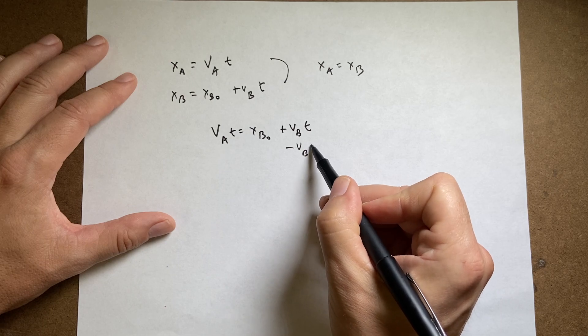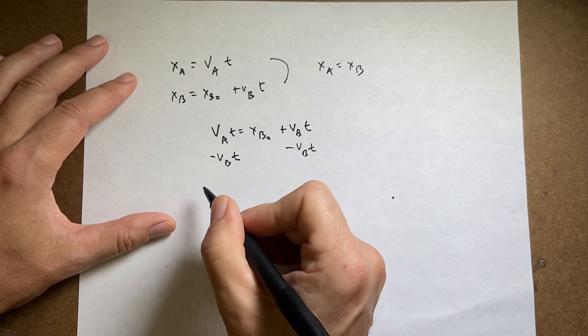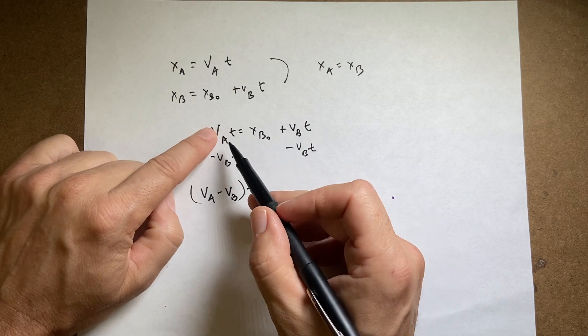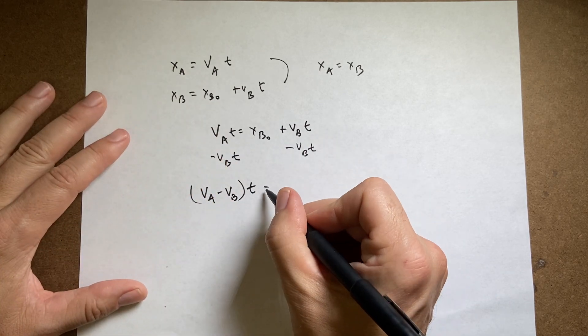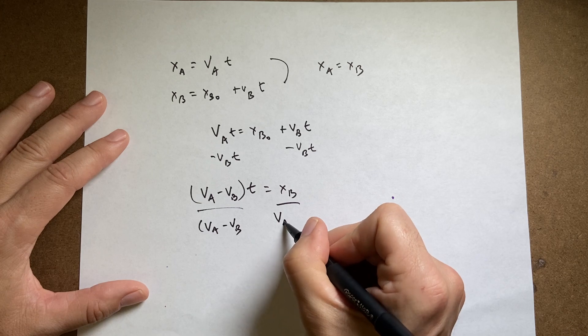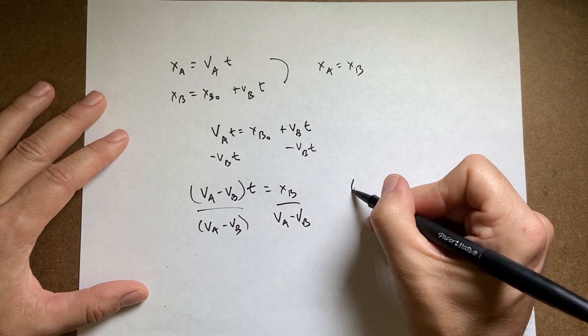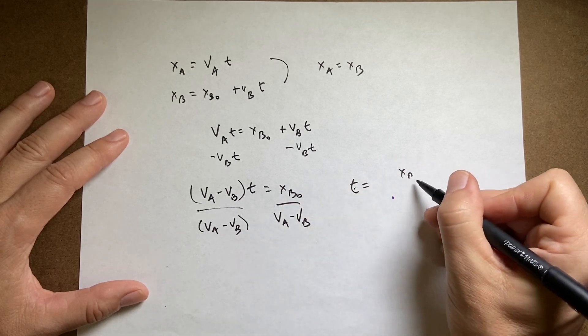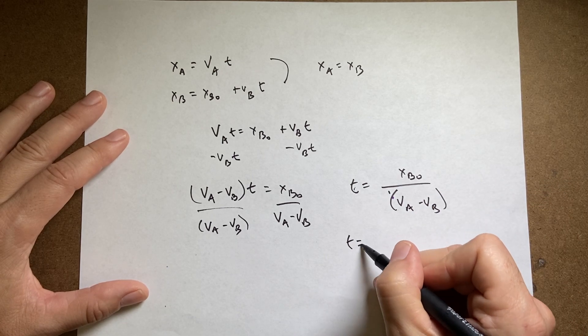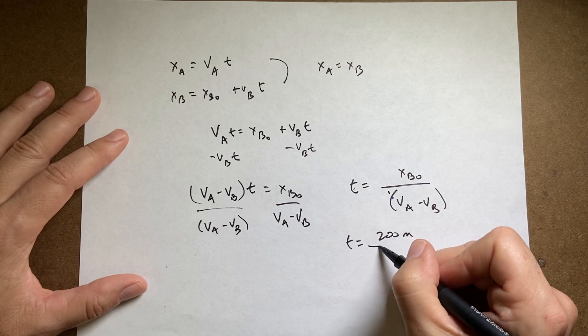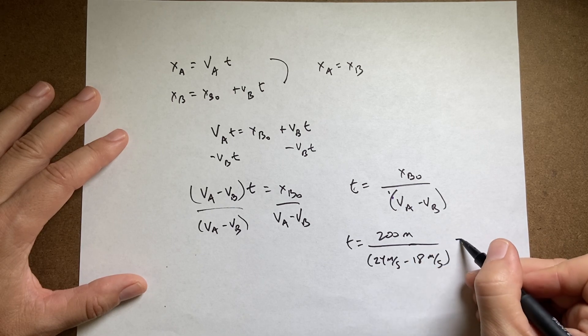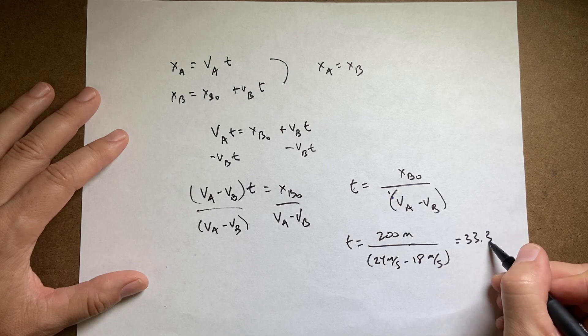So vat equals xB0 plus vbt. Now I want to solve for time. I'm going to subtract vbt from both sides. And I get va minus vb times t. I did factor that. The t is in both of those. So I factored it out. And that's going to be xB0. Now I divide both sides by va minus vb. And I get t equals xB0 over va minus vb. And I can solve for that. I get 200 meters over 24 meters per second minus 18 meters per second. And if you plug that into your calculator, I got 33.3 seconds.